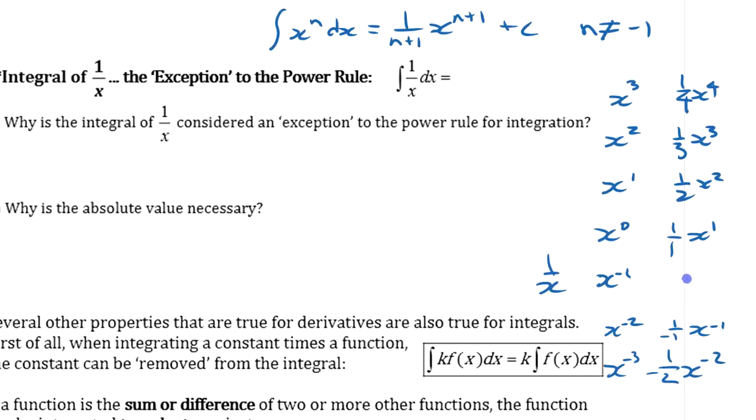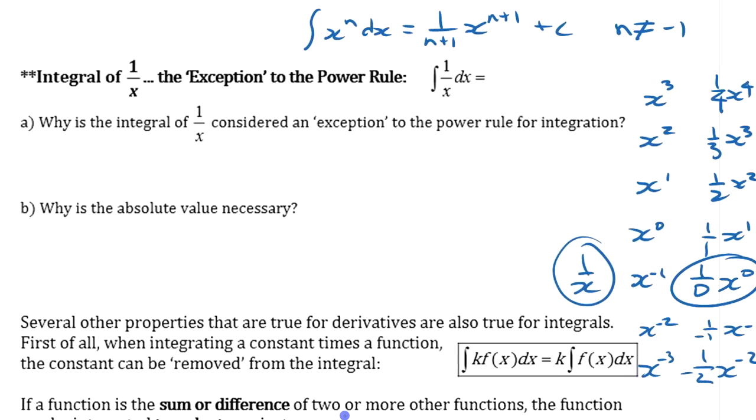The reason is because, think about this here, if you bump the power up 1, you get 0, and you got 1 over 0, that doesn't work. That doesn't follow. 1 over x was the derivative of something completely different. 1 over x was the derivative of natural logarithm of x, okay? So, why is it an exception? Because its integral is something totally different. Its integral is natural log of absolute value of x plus a constant.